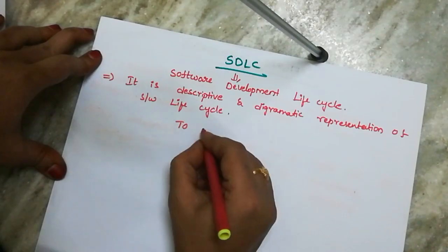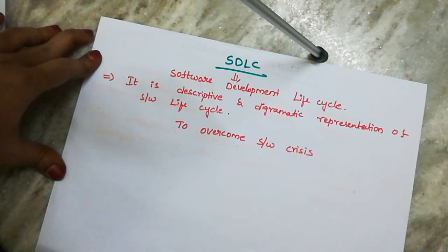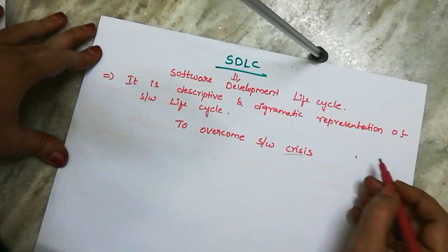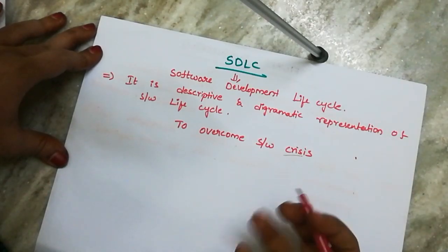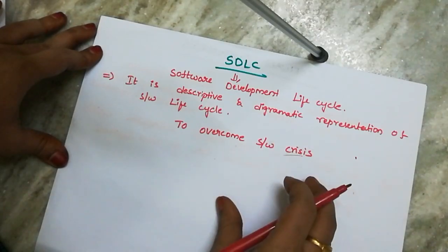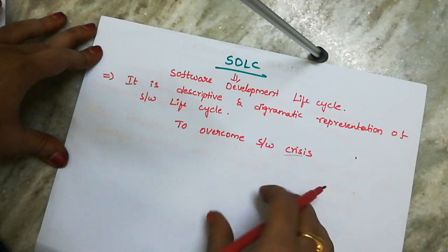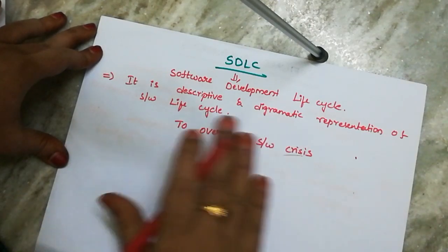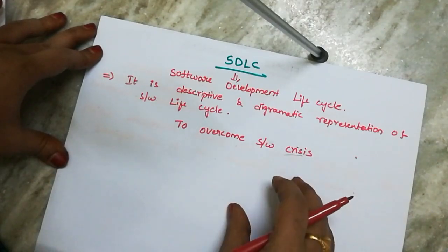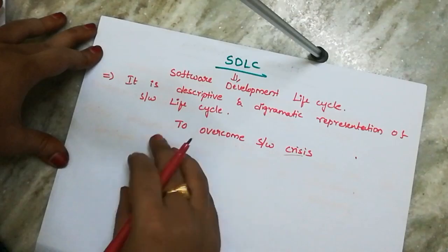SDLC is used to overcome software crisis. What is software crisis? Crisis means it is difficult — because of mistakes and difficulties in developing software. We are going to use SDLC to overcome software crisis, that means to overcome software problems.